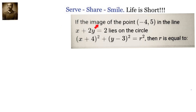If the image of the point minus 4 comma 5 in the line x plus 2y equals to 2 lies on the circle x plus 4 whole square plus y minus 3 whole square equals r square, then r is equals to?